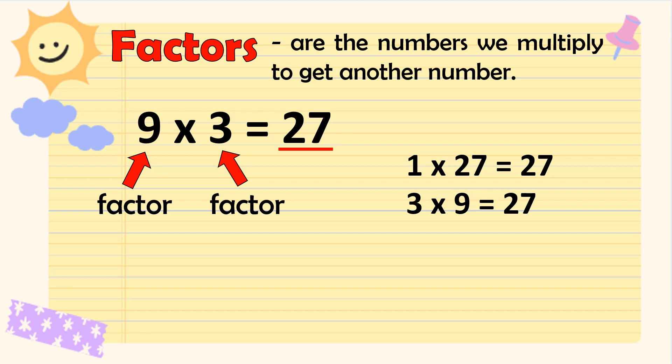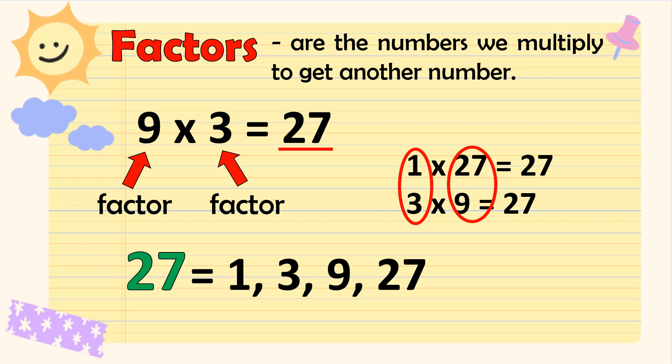Ano-ano pa kaya ang mga number na kapag minultiply natin ay makakakuha ng product na 27? Tama! Ang 1 times 27 is equal to 27. Ang 3 times 9 na ginamit natin kanina or ang 9 times 3 ay 27. Ngayon, kukunin natin ang mga numbers na ito. Ano-ano ang mga ito? Tama! Ito ang mga factors. Thus, ang factors ng 27 ay ang 1, 3, 9, at 27.